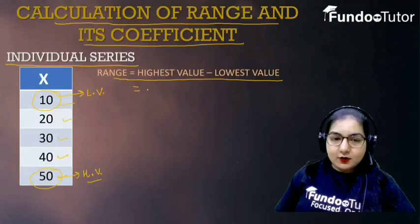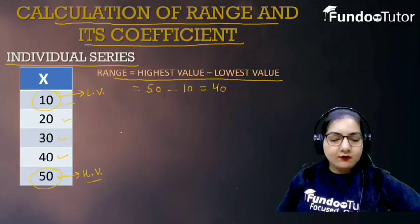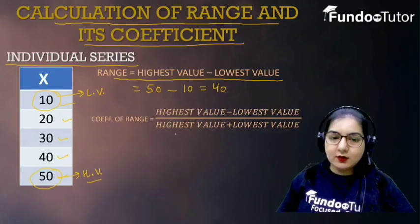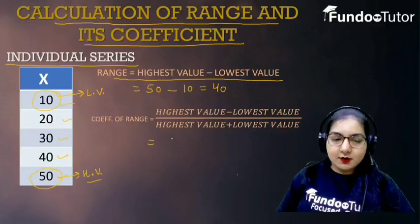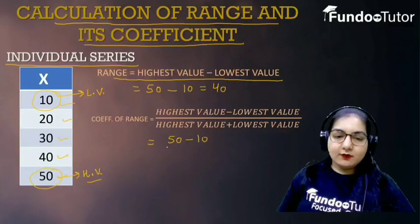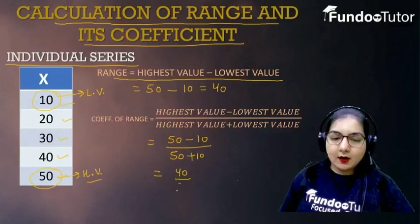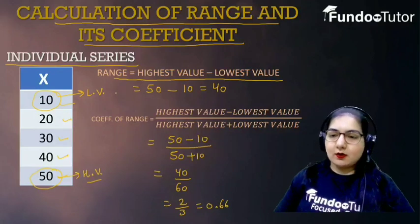Substituting the values: highest value is 50 minus lowest value 10, so we get range = 40. Then you apply the coefficient of range formula: coefficient of range is equal to highest value minus lowest value, upon highest value plus lowest value. Substituting: 50 minus 10 upon 50 plus 10, which is 40 upon 60, which is 2/3, which is 0.66. So, coefficient of range is 0.66.